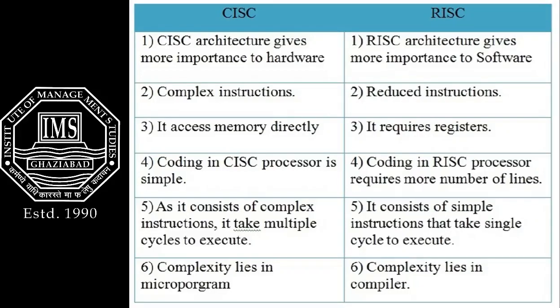Memory access: CISC can access memory directly, whereas in RISC architecture a CPU register is required to access the memory. Coding in a CISC processor is simpler, whereas coding in a RISC processor is comparatively more complex. As CISC consists of complex instructions, it takes multiple cycles to execute, but RISC uses simple instructions and therefore requires only a single cycle to execute.